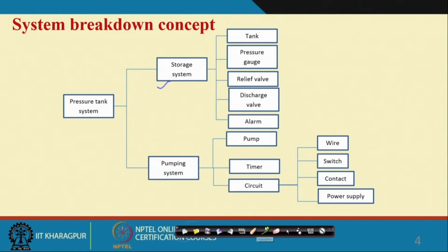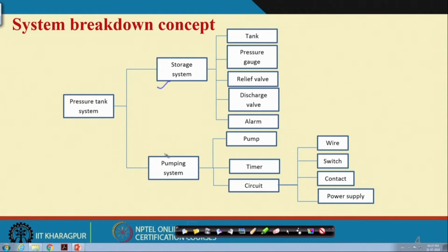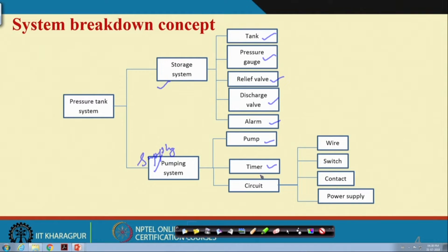With reference to this system, I have identified that this pressure tank system has a storage system and a pumping system — or supply system. In the storage system: the pressure tank, pressure gauge, relief valve, discharge valve, and alarm are the components. For the pumping system: the pump, timer, and the electric circuit — with wire, switch, contact, and power supply.